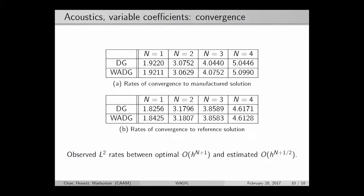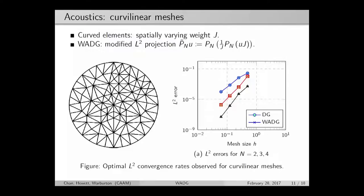I'll briefly mention if you apply this to curvilinear meshes, then your weighted mass matrices now involve spatially varying weights which are geometric in nature. And as before, we basically see that the errors for both DG and weight-adjusted DG lie on top of each other.